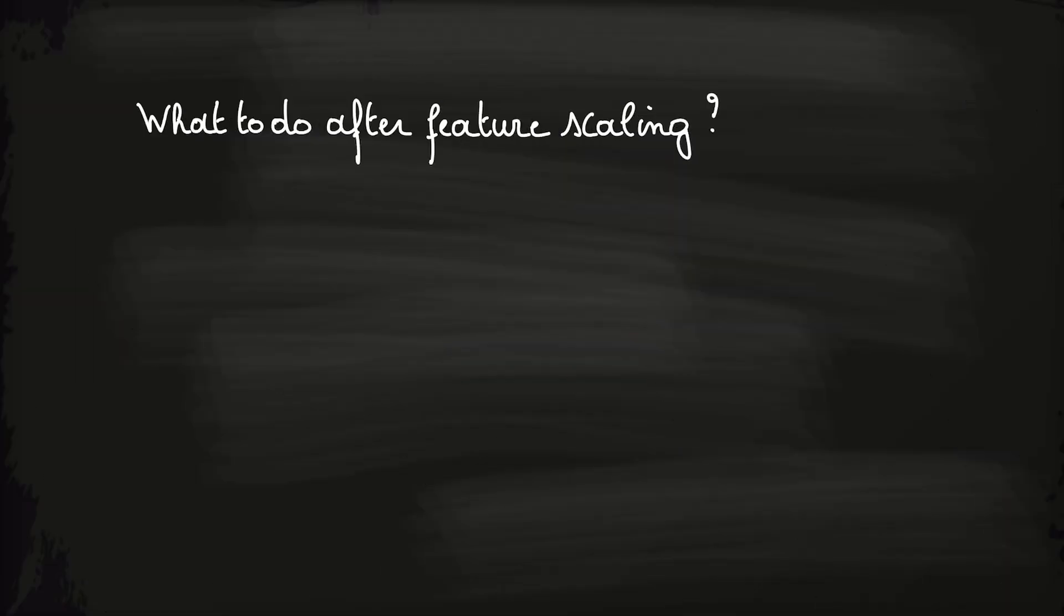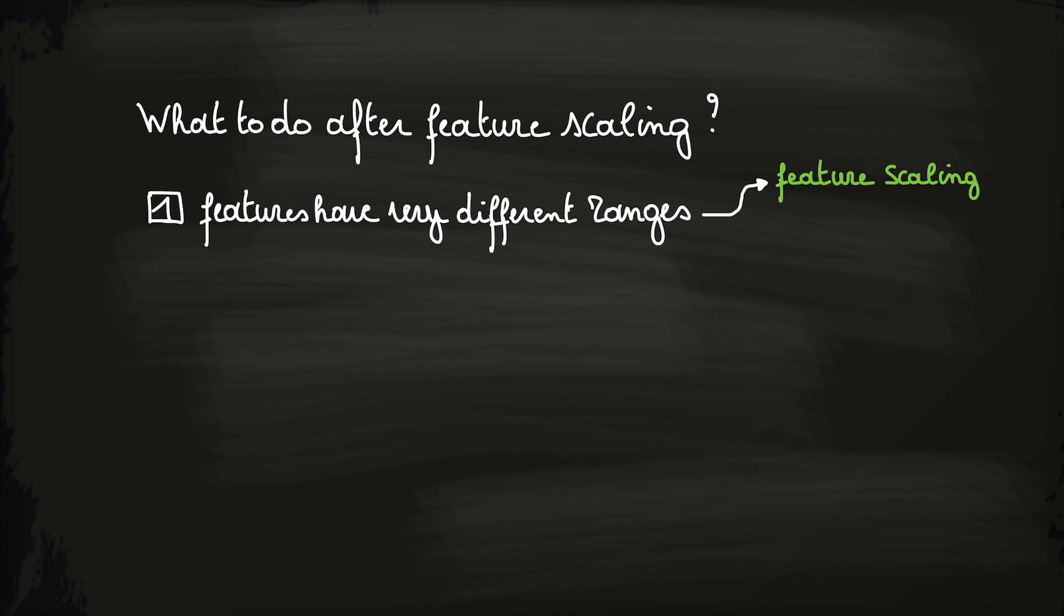So, you are working on a problem and you notice that your different features have very different ranges. Then a first step consists of scaling our features so that they are on a similar range. One example to do so is by applying mean normalization. If you did this for your original dataset, you get a new dataset containing the scaled features. Next, you train your model on the scaled features.